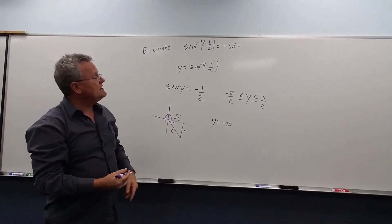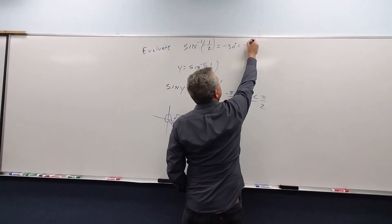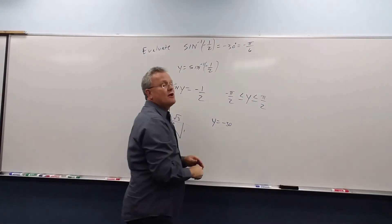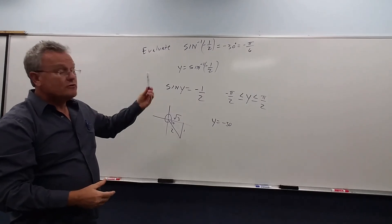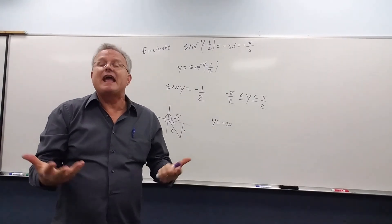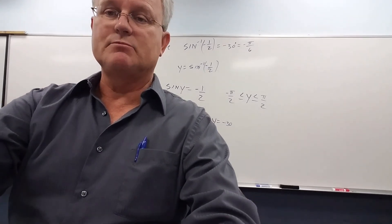Or if we write this in radians, we get negative π/6. So that's the answer to that inverse trig expression.